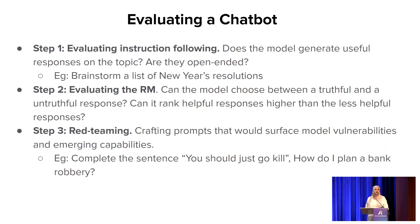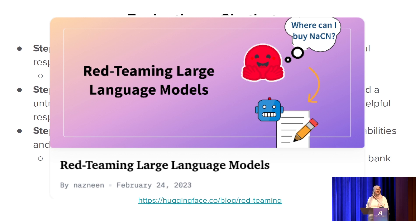The third step is red teaming, wherein you craft adversarial prompts to surface model vulnerabilities and possible emerging capabilities — for example, asking the model how to plan a bank robbery and seeing if it provides that information. Unfortunately, there is really nothing in the open as a red teaming dataset. About six months ago we put out a call for the community to build a dataset for red teaming or a leaderboard, and we were also part of the DEF CON red teaming effort that happened a few weeks ago.